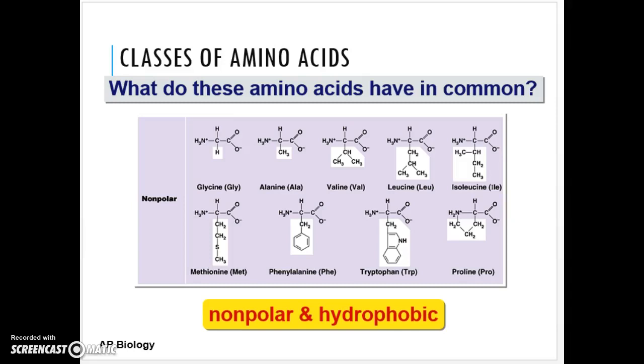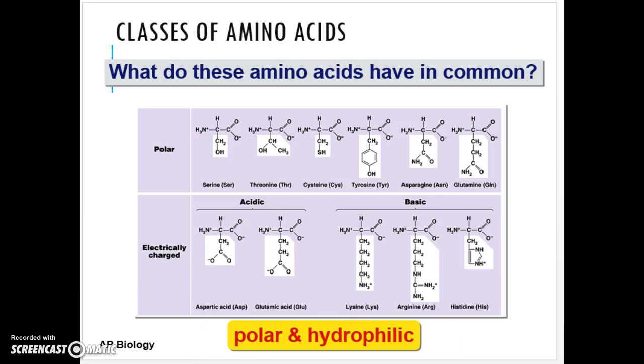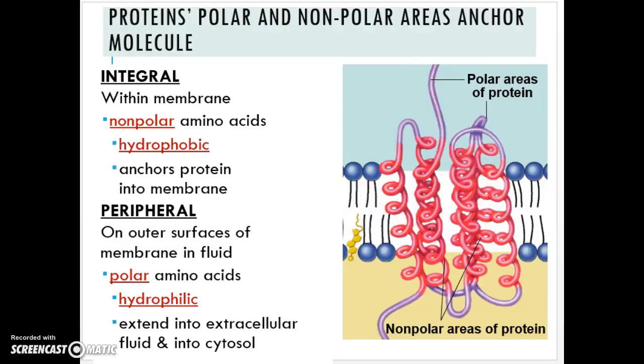This is part two of chapter seven's lecture and we left off talking about the proteins that we find in the cell membrane. The reason that proteins make such great additions to the cell membrane is because of the versatility that we find among the different amino acids that make up a protein. As we studied in our last unit, their characteristics and chemical properties for each of the amino acids, we group them like nonpolar hydrophobic or polar and hydrophilic.